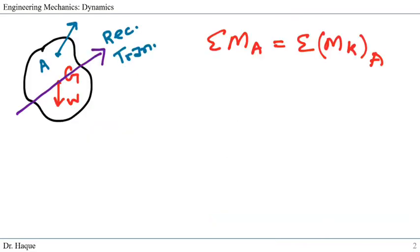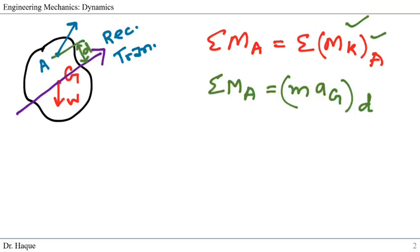If we're interested about a point A which is not going through point G, we can still apply the rotation equation where we can take the moments about point A. The kinetic moment will be only m*ag multiplied by D, which is the perpendicular distance of point A to point G. This is because our angular acceleration is zero, so Iz*alpha becomes zero, so we are left with only this part.